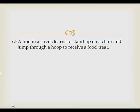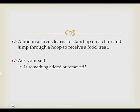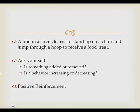A lion in a circus learns to stand up on a chair and jump through a hoop to receive a food treat. We ask ourselves: is something being added or removed? In this example, a treat is being added. If something is added, our first term is positive. Since the behavior is increasing, we have positive reinforcement. That's the answer to this operant conditioning question.